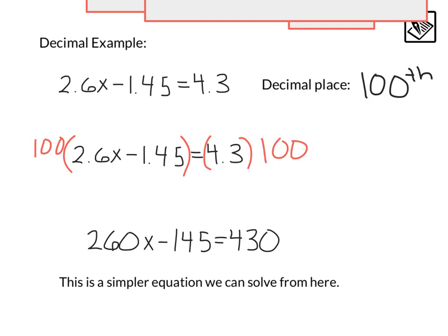So real quickly, by multiplying by that power of 10, in this case 100, we cleared the decimals, and this is something simpler that we can solve from here. Again, we're going to save time by not finishing that problem off.